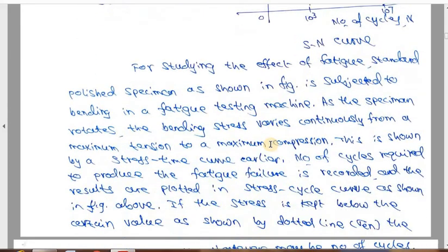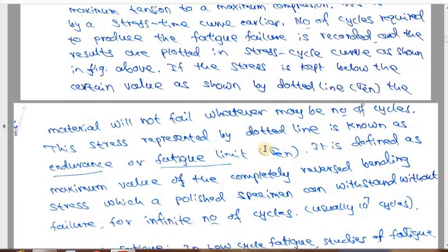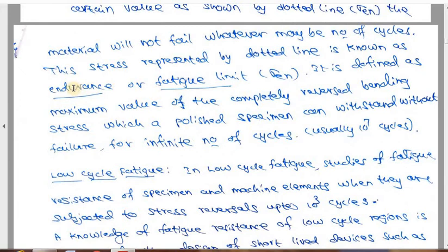This is what we call the endurance limit of the material, sometimes written as sigma_en. This is a very important stress in the design of machine components. The material will sustain cyclic loading at this particular stress level for an infinite number of cycles — that is the endurance limit.